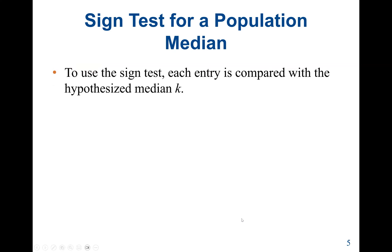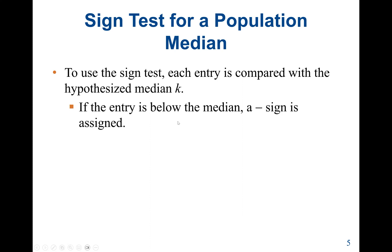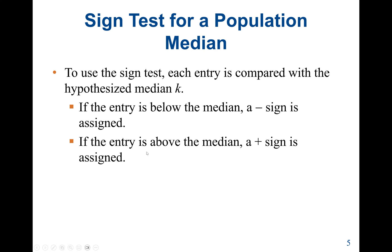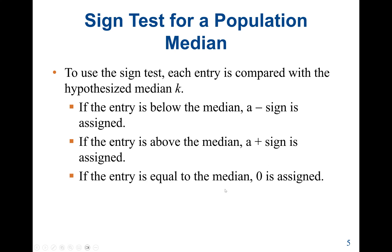To use a sign test, each entry is compared with the hypothesized median K. If the data entry is below the median, we assign a negative sign. If the entry is above the median value, we assign a positive sign. If the entry is equal to the median, we assign zero.